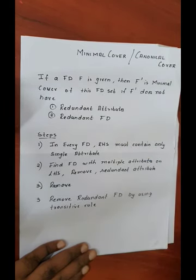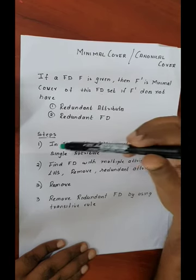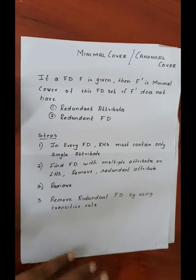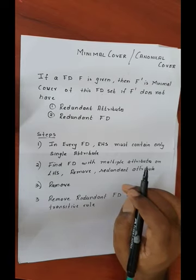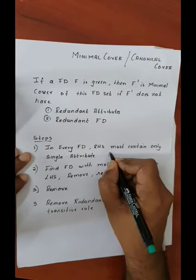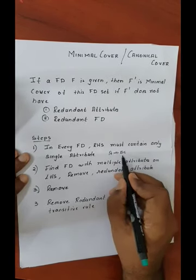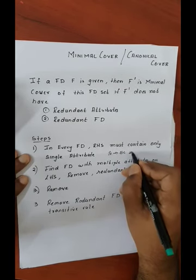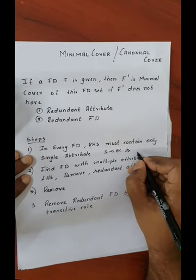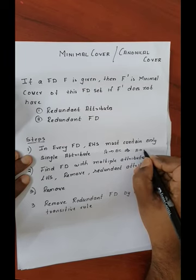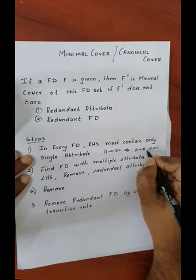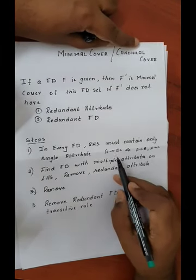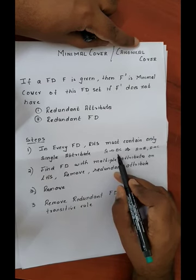There are three steps for finding the minimal cover. The first step is: in every functional dependency, the RHS must contain only a single attribute. For example, if we have a functional dependency A determines BC, the RHS has multiple attributes — that must be decomposed. Using the decomposition rule, it can be rewritten as A to B and A to C. So according to the decomposition rule we can remove multiple attributes from the RHS.